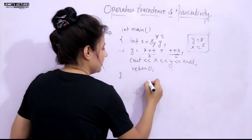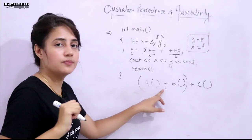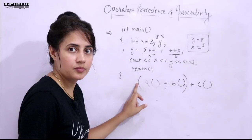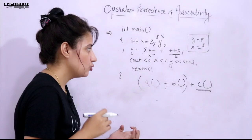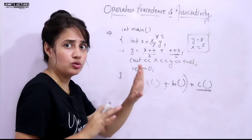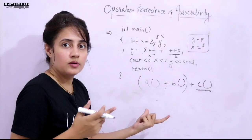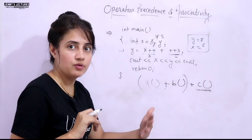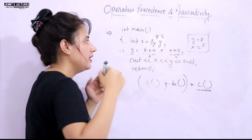For example, in a + b + c(), associativity (left to right) means it groups as (a+b)+c(), but the function call c() could actually be evaluated last, first, or in between a and b at runtime — it depends entirely on the compiler.